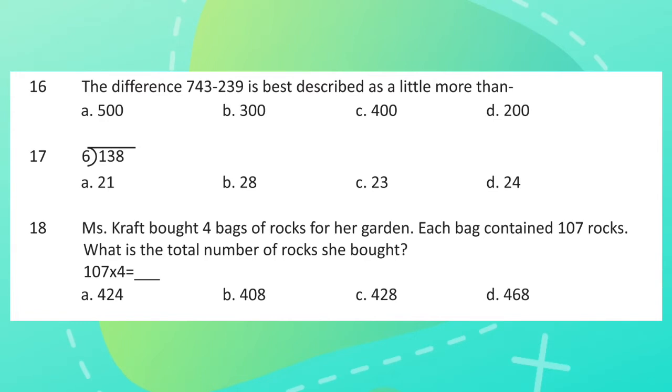Question 16: The difference 743 minus 239 is best described as a little more than? Question 17: 138 divided by 6. Question 18: Miss Craft bought four bags of rocks for her garden. Each bag contains 107 rocks. What is the total number of rocks she bought?